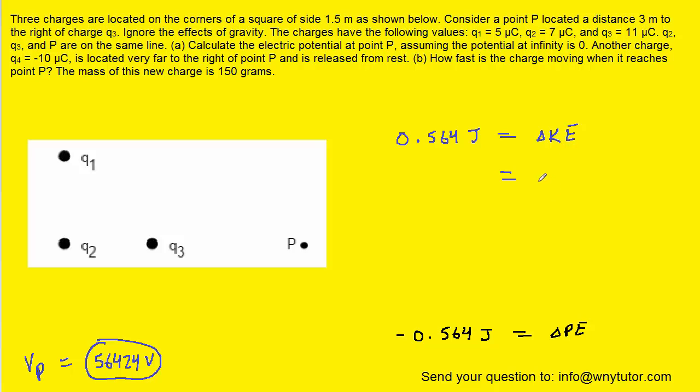Now, for the change in kinetic energy, we can write that as kinetic energy final minus kinetic energy initial. And the question notes that the particle is released from rest. So the initial kinetic energy will be zero. We can then substitute in the expression for kinetic energy, which is one half times the mass times the final speed squared. And we can then solve this equation for VF. We can multiply both sides by two and then divide by the mass and take the square root.